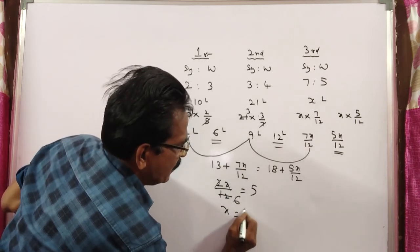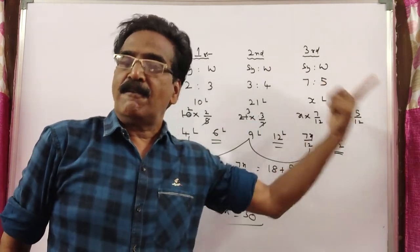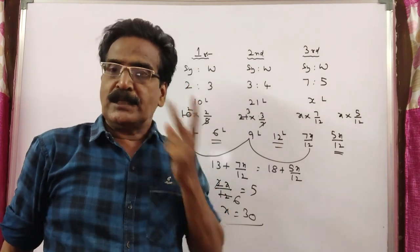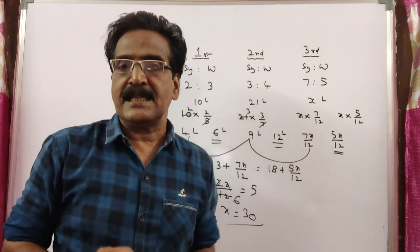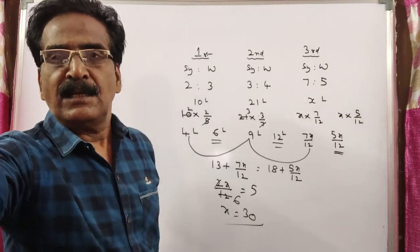So 30 liters of mixture must be drawn from the third bottle, so that the final mixture, the syrup and water will be in the ratio 1 is to 1. Okay friends, thank you.